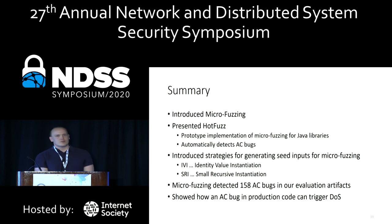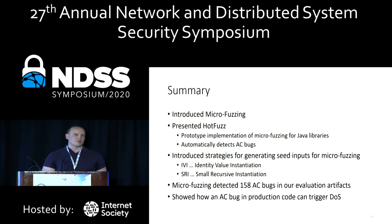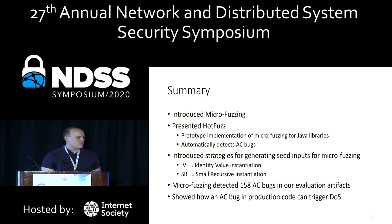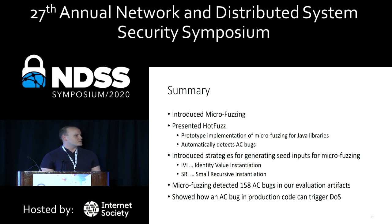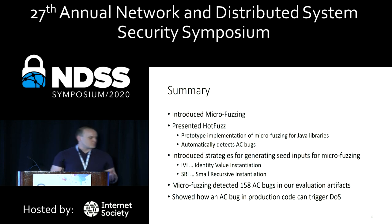In summary, I've introduced micro-fuzzing as a technique for automatically executing code in high-level languages and sanitizing its execution for algorithmic complexity vulnerabilities. We described our prototype implementation HotFuzz and outlined two strategies for generating seed inputs — SRI and IVI — demonstrating that SRI outperformed the baseline. In our evaluation across the JRE and Maven artifacts, we found 150 AC bugs, as well as detecting both known and previously unknown vulnerabilities in the DARPA STAC challenges, and showed how an AC bug in production can trigger denial of service in unsuspecting victim programs.